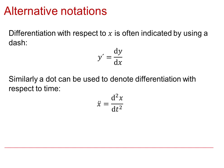Differentiation with respect to x is often indicated by using a dash. For example here, y dash equals dy by dx for the first derivative. If we were to look at a second derivative, y double dashed would be d2y by dx squared.